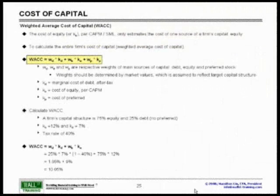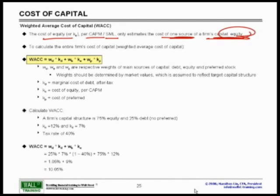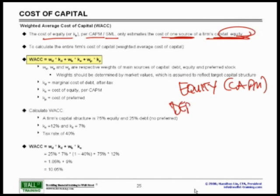Let's now take a look at the last concept we're going to talk about: the weighted average cost of capital. The cost of equity we already agreed is estimated via the CAPM-SML, and this estimates only one source of a firm's capital — in this case, equity. However, for a company there are multiple sources of capital. Typically we have equity via CAPM, and we have debt, and we'll talk about how to estimate the cost of debt shortly via interest or coupon.